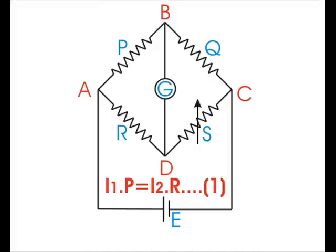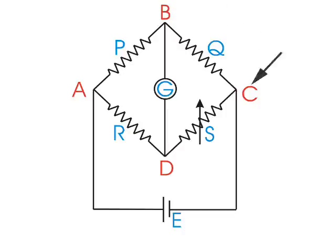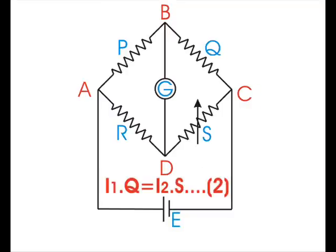For the same reason, the voltage drop from point B to point C is equal to the voltage drop from point D to point C. That is, I1 into Q is equal to I2 into S, and say this is equation 2.